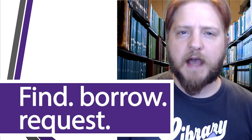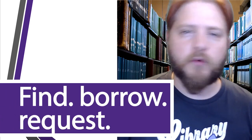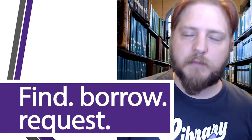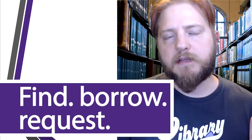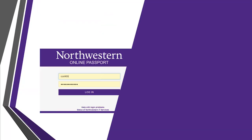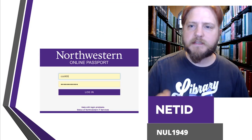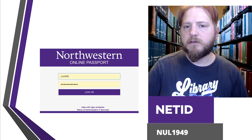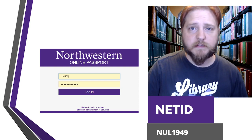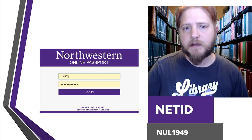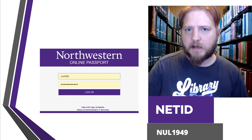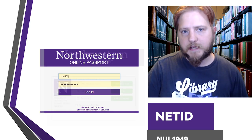The first thing you need to know is how do I get into the library, and that's true whether you're going into the building or accessing it from online. There are two things that you need to access your library from your computer. The first is your NetID. This is the login that you use for your Canvas courses — a series of letters followed by a series of numbers. Whenever you access something provided by the library, you'll use this to get in.